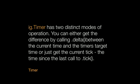Finally, there is a timer class with two distinct modes of operation: you can get the difference by calling delta between the current time and the timer's target time, or call tick to get the time since the last call to tick. This allows you to synchronize events using time-based synchronization versus frame-based synchronization. And that's the last class in Impact — it's a very small framework, which is really good because it gets everything out of the way and lets you go right into making your game.